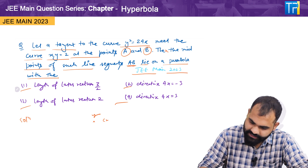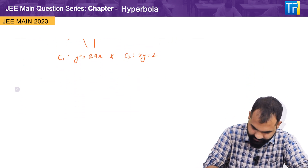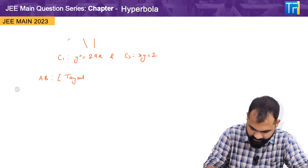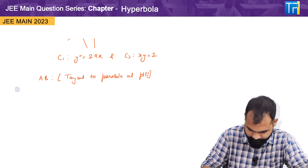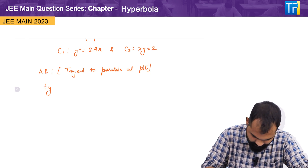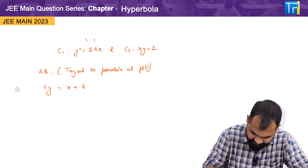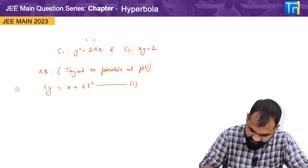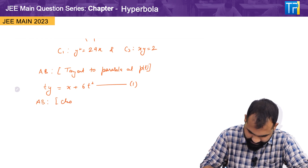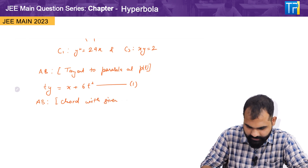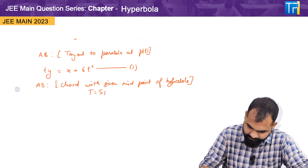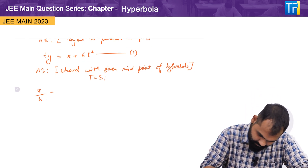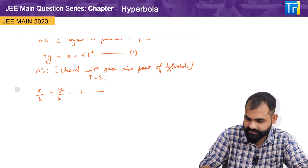We want the midpoint of line segment AB to lie on a parabola. A tangent to the parabola gives us the equation: ty = x + 6t², which is equation one. Solving further, the chord of contact for the hyperbola xy = 2 gives us x/h + y/k = 2, which is equation two.